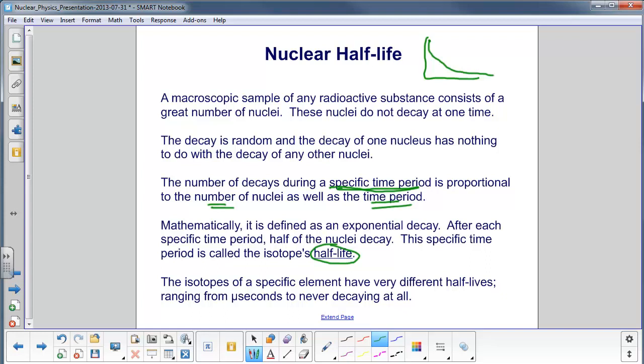The isotopes of a specific element have very different half-lives. Some isotopes never decay, and some will decay in microseconds. So just by changing the neutron number, you've totally changed the nuclear properties of that element.